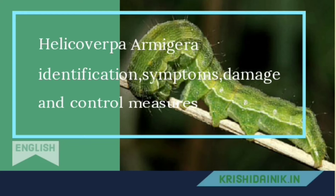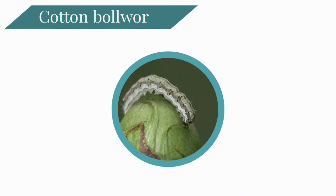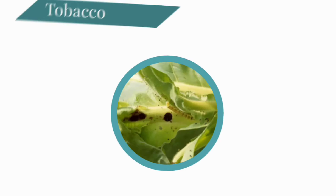Helicorpa armigera is found on major crops such as cotton, gram, maize, tea, tobacco, red gram, and also on tomato crop.